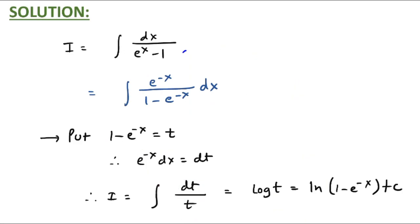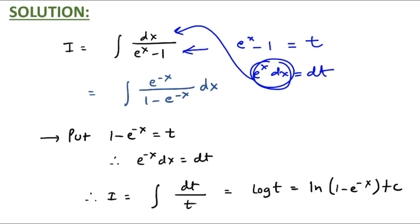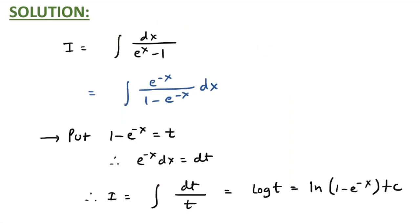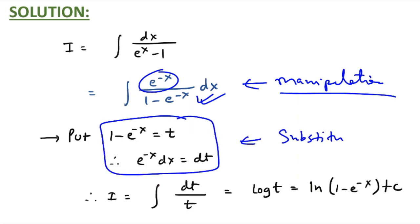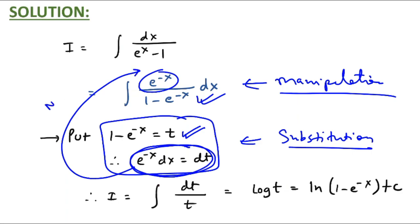If you try a straight substitution like e raised to x minus 1 equal to t, then e raised to x dx would equal dt, but the numerator is only dx — so straight substitution does not work. That is why this function is tricky. We had to manipulate: multiply and divide by e raised to minus x, then substitute. Substitution worked because differentiating the denominator gives e raised to minus x dx, which equals dt — matching the numerator. Manipulation was very important in this question.